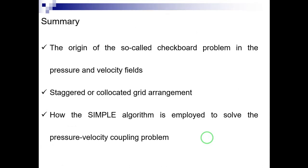In summary, we learned what the origin of the so-called checkerboard problem in the pressure and velocity fields is. We also learned how to use either a staggered or collocated grid arrangement to solve this problem. Finally, we learned how the SIMPLE algorithm is employed to solve the pressure-velocity coupling problem in both the staggered and collocated grid arrangements. This is the end of the video. Please leave a comment and subscribe to the channel for further upcoming videos.